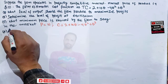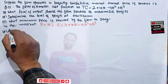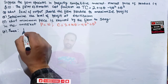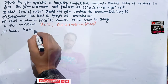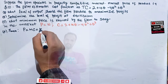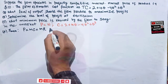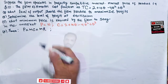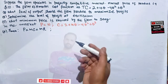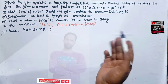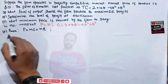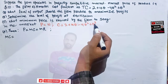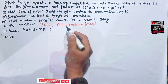At equilibrium, profit will be maximum when price equals marginal cost equals marginal revenue. This is the condition for profit maximization in perfect competition. Marginal cost is simply the derivative of the total cost function with respect to quantity.